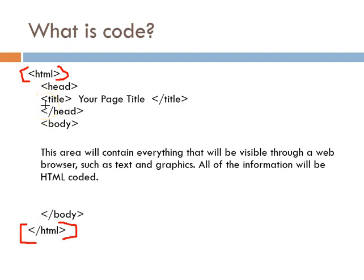An easier example is to look at the title. The title is the information that shows up at the top of a web browser, and if you were to bookmark that web page, the title is what would show up as the name of the bookmark. The code for title is: wicket 'title' wicket, and then it's closed with wicket backslash 'title' wicket. All code has to have an opening and a closing — this is the standard code that would appear on every web page.